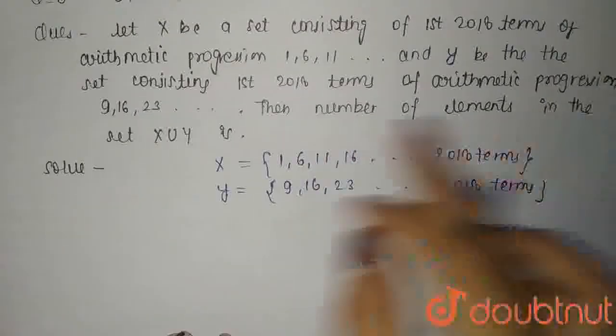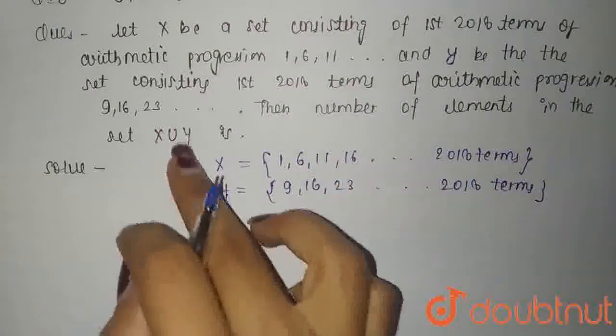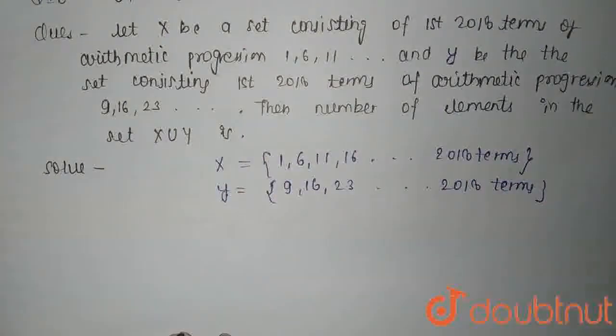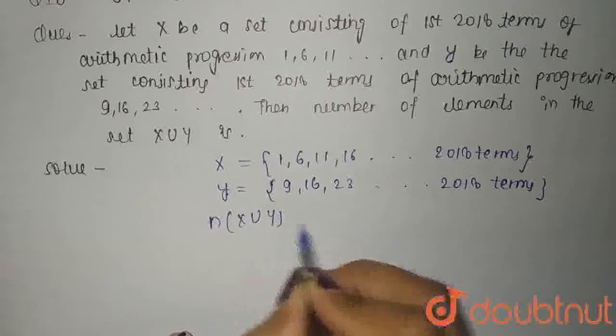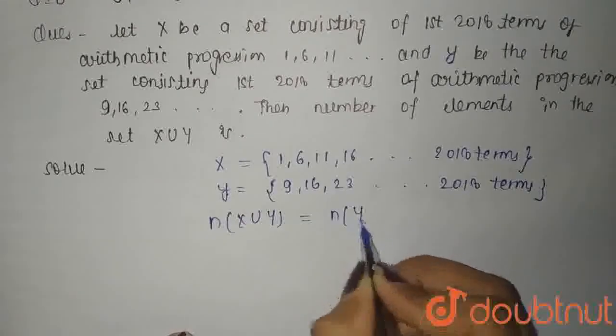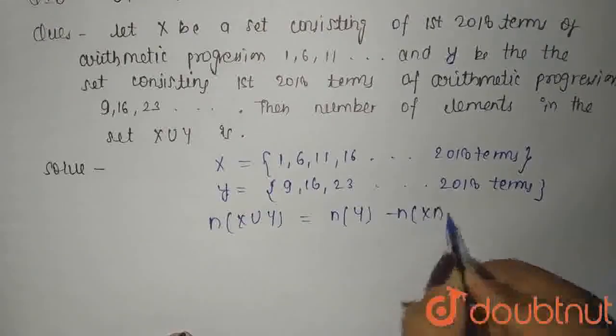Then the number of elements in the set X union Y is what we need to find. The number of X union Y is equal to n(X) plus n(Y) minus n(X intersection Y).